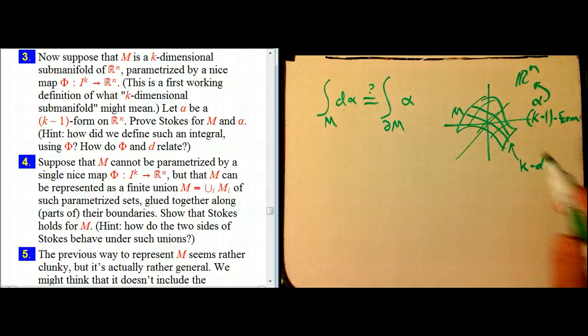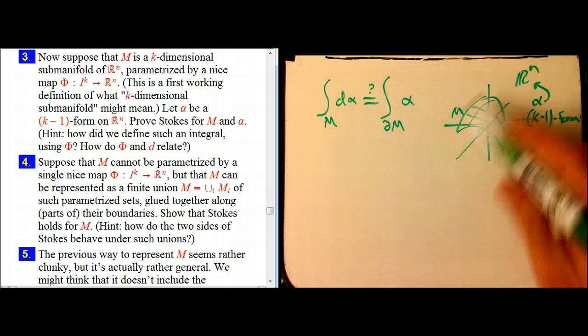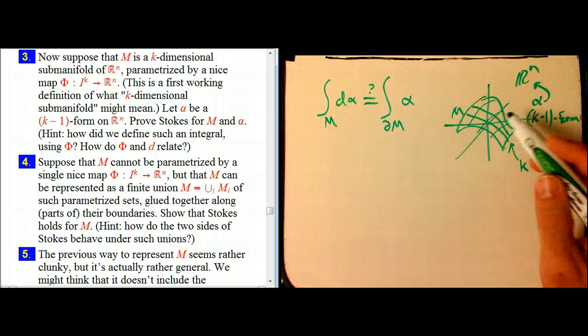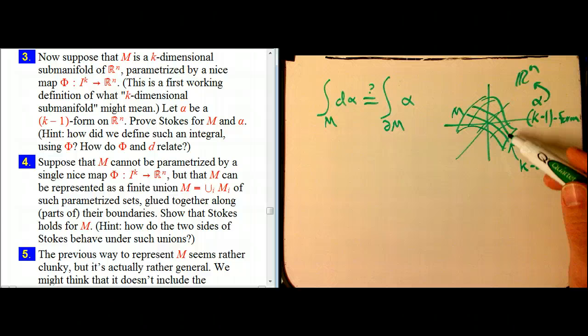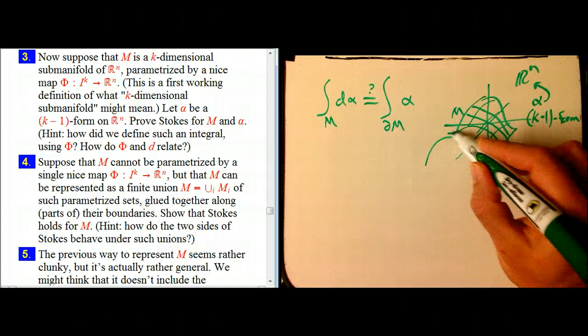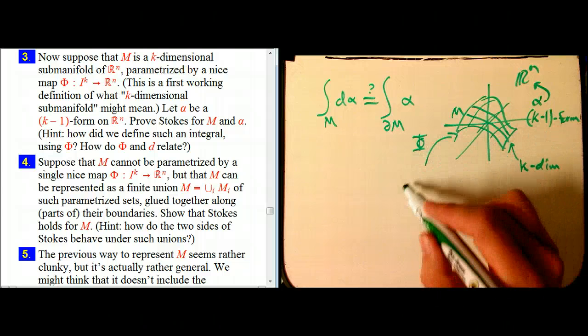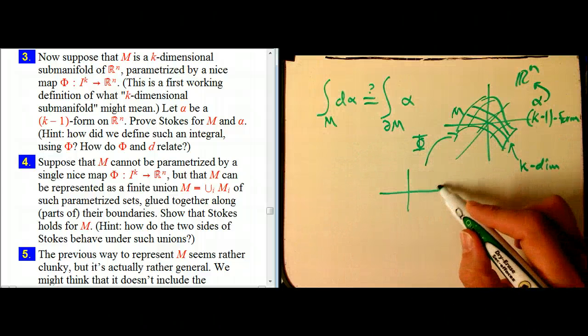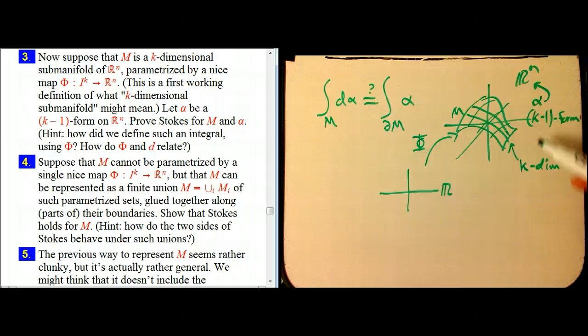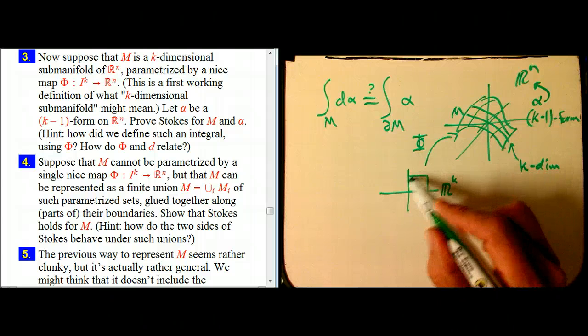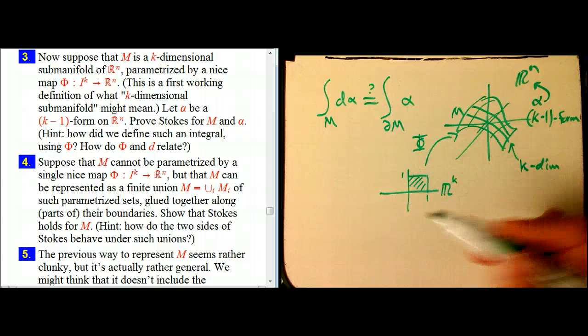So the case we're going to do, it's not going to be the absolutely completely general case, but typically what we have for one of these sets M is it's parametrized. Let's call the parameter map phi, and it's coming from some domain in, well, if this is k-dimensional, it's going to be some domain in Rk. And I'm going to do the special case where that parameter domain is just the unit square.